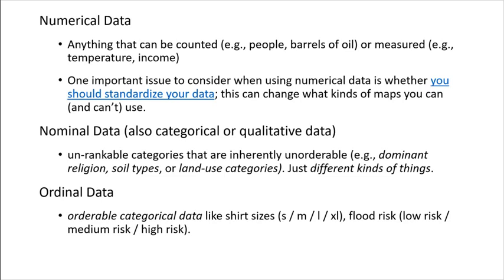So nominal data means like a name. Think about it like that. These are completely equal descriptions, unrankable categories, inherently unorderable like soil types, land use, state names. They're just different kinds of things.